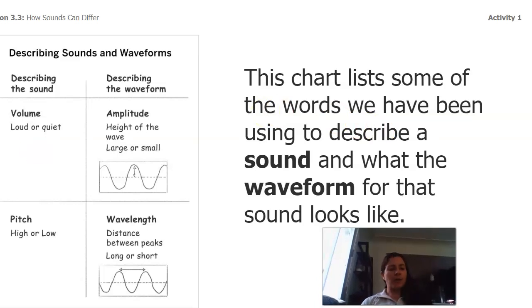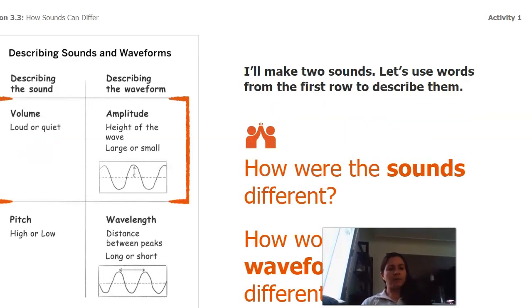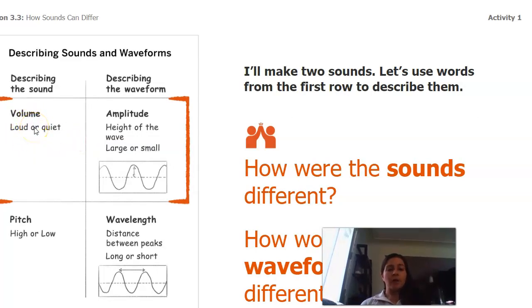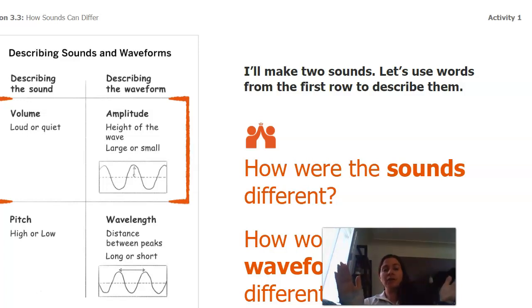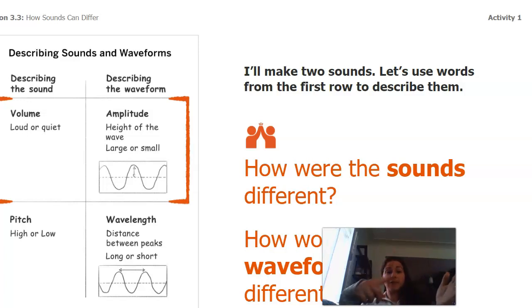Let's look at each of these a little bit closer. The first one: volume — loud or quiet. I can do a loud clap or I can do a quiet clap. Those two different claps actually have different waves happening.